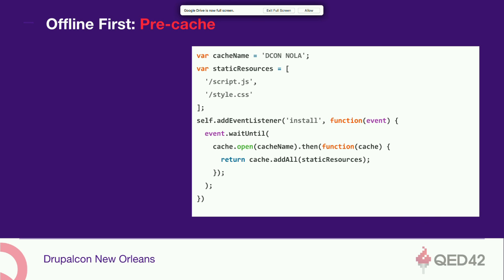The second strategy is network first — you replace serveFromCache with serveFromNetwork. Here, you do a fetch request on the URL, update the cache first, then send back the response. One important detail: we perform a clone on the response object because it's a readable stream that can only be consumed once — either respond to the browser or cache it. So we clone it, cache the clone, and return the actual response. If the fetch fails, we do a cache lookup and present users with a stale copy.